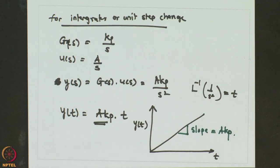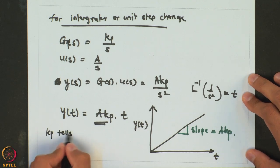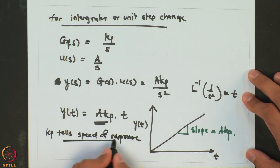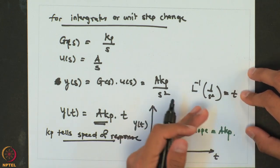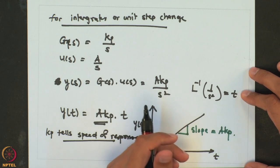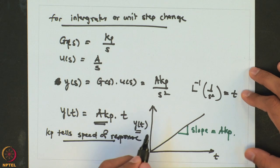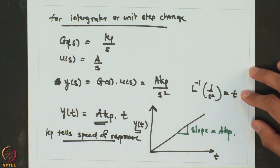For a purely capacitive system, kp tells us about the speed of response — the larger the value of kp, the larger the slope and the faster the system reaches its ultimate value. Mathematically the output goes to infinity, but physically there is always some maximum value y can take — for example, 100% level of a tank. So a higher kp means a faster system response toward that physical limit.